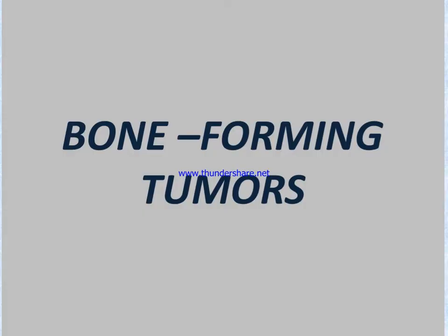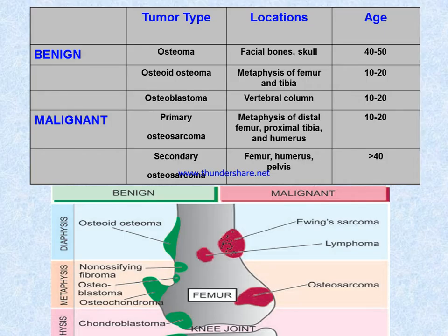In bone-forming tumors, we divide into two categories: benign and malignant. In the benign category, we include osteoma, osteoid osteoma, and osteoblastoma.